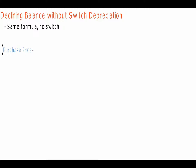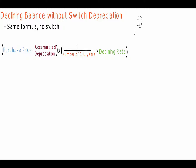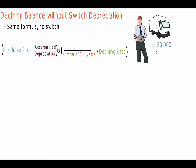Declining balance without switch. The declining balance without switch depreciation method uses the same formula as the declining balance with switch depreciation method, only now the straight line depreciation method will be ignored and the asset will only depreciate using the declining balance formula. Using Lenny's example again, he has the delivery truck at $150,000, still estimated to have no salvage value at the end of six years. His declining balance depreciation rate is still 200%, and the cost minus the accumulated depreciation, multiplied by 1 divided by the number of estimated useful years multiplied by the depreciation rate, gives a depreciation value of $50,000.